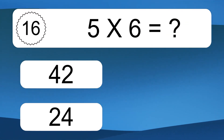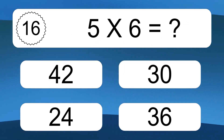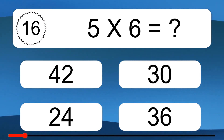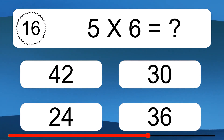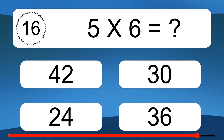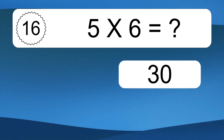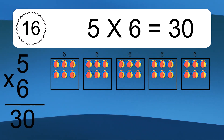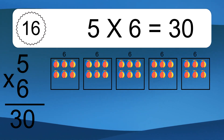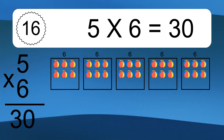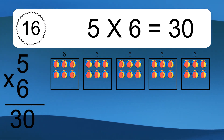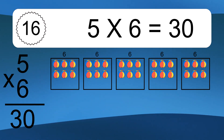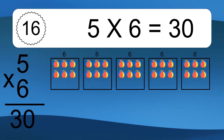5 times 6 equals what? 5 times 6 equals 30. We have 5 boxes, and each box has 6 colorful balls inside. If you count all the balls in all the boxes together, you will have 5 times 6 balls. This equals 30 balls.